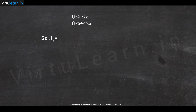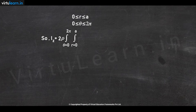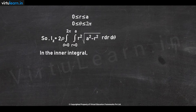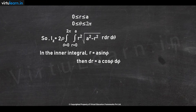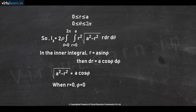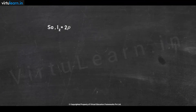So I_z becomes 2 rho times the integral from θ = 0 to 2π, integral from r = 0 to a, of r² times root(a² − r²) times r dr dθ. The inner integral can be evaluated by introducing a trigonometric substitution. In the inner integral, let r = a sin φ, so dr = a cos φ dφ, and root(a² − r²) becomes a cos φ. When r = 0, φ = 0; when r = a, φ = π/2. The factor r² · r becomes a³ sin³ φ.